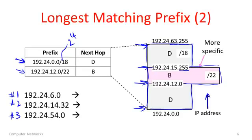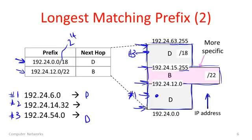Address number 1 is 192.24.6.0. That's below .12.0 on our address range, so it falls in the grey region. We forward it to D. Address number 3 is 192.24.54.0. That's above .15.0 and below 63.0, so it's also in the grey region, and number 3 also goes to D. The middle one, number 2, has address 192.24.14.32 — that's between the lower and higher address of the pink slash 22 block. So number 2 will go to B. This is the longest matching prefix algorithm in action.